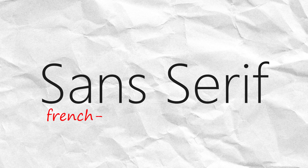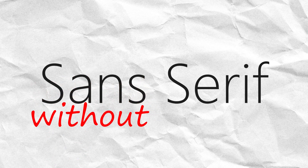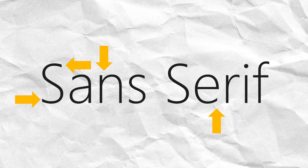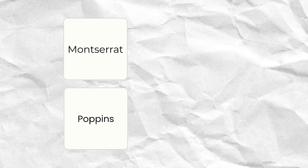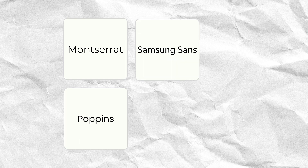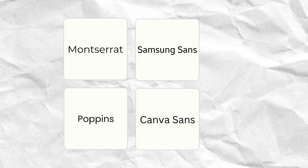Number two, we have Sans Serif. The name derives from French — 'sans' means without — so it simply means without Serif. These fonts have no decorative strokes at the end of each letter, which gives them a more modern and clean look. Examples include Montserrat, which is every designer's favorite, as well as Poppins, Samsung Sans, Canva Sans, and Alibaba Sans. Canva has a lot more to choose from.